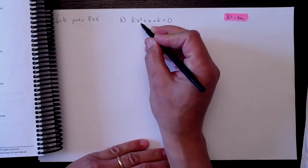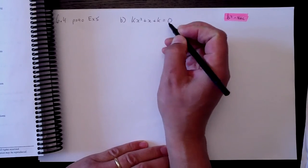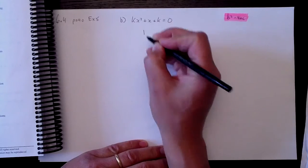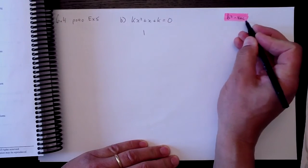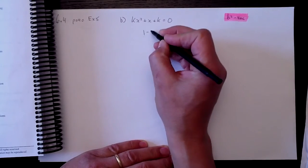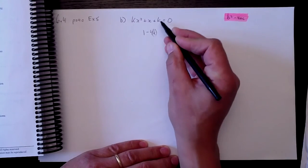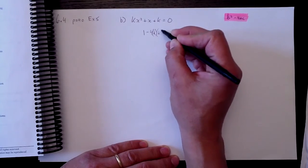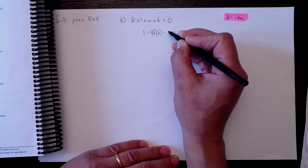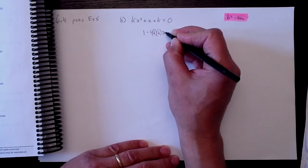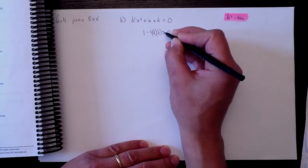So k x squared plus x plus k equals zero. So the discriminant then is B squared, which B is a one, so it's one squared is one, minus 4ac minus 4 times a, which is k, times c, which is also k. It doesn't equal zero, but it has to be greater than zero because I want two real solutions. It must be greater than zero.